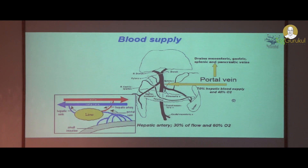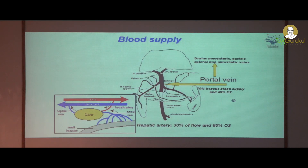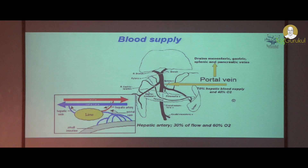Coming to the blood supply, whenever you administer any drug, almost the entire drug enters the portal vein and goes to the liver for biotransformation. As you can see here, in the small intestine the drug enters the portal vein, it enters into the liver, and then biotransformation occurs. The compound may become toxic or a metabolite may be produced, and it can be excreted into bile or it may enter the hepatic vein.